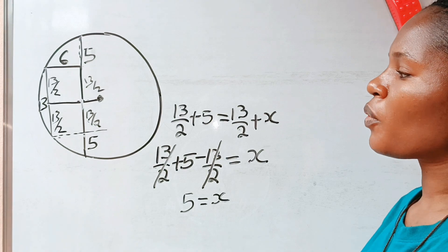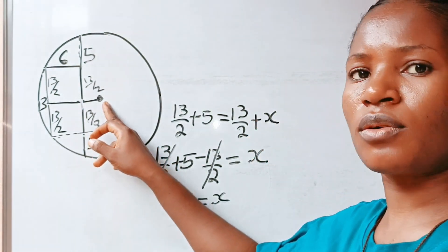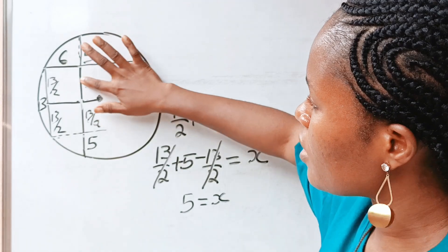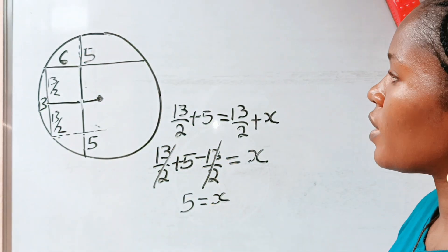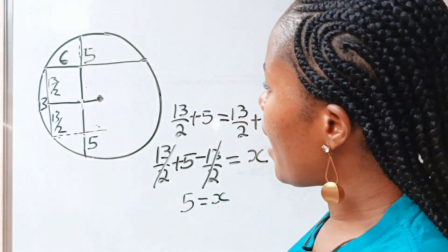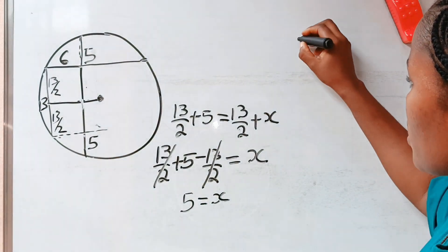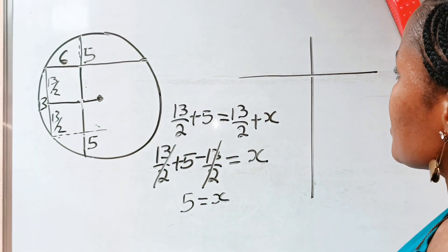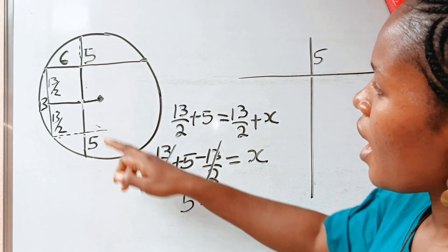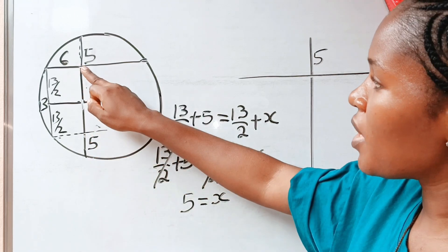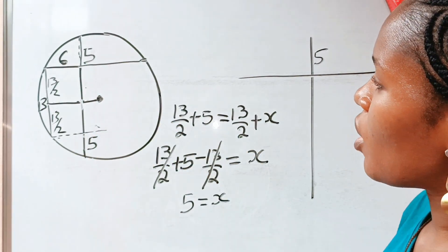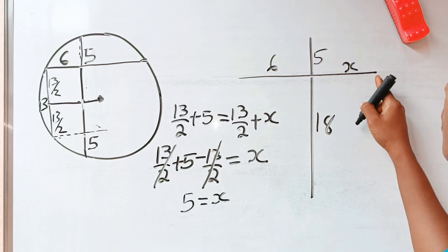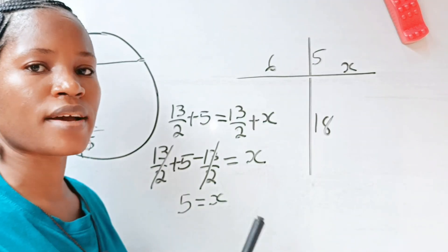The question asks us to find the radius of this circle. If I draw a line from here to here, I have two chords intersecting. From here to here is 5, and from here to here is 18 — because 13 plus 5 gives 18. And here we have 6. Now I want to explain the chord-chord power theorem.